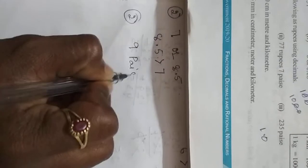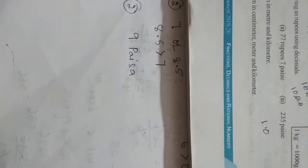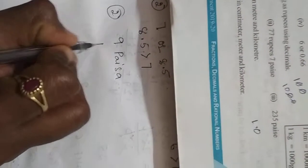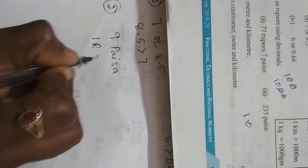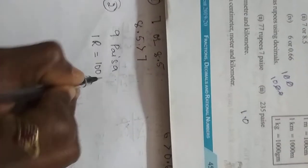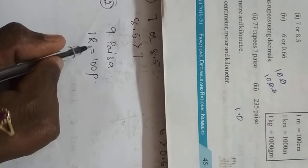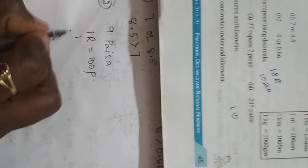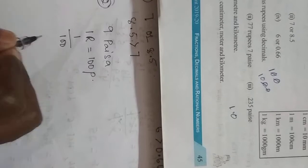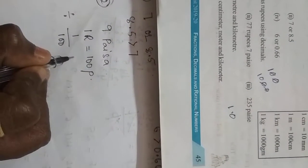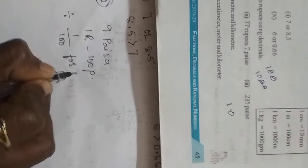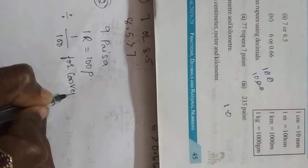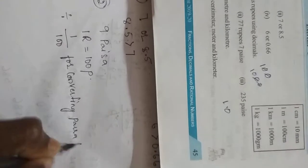9 paisa. Same, 1 rupee equals 100 paisa, right? So to convert paisa into rupees, you have to divide it by 100. You have to divide it by 100 for converting paisa to rupees.